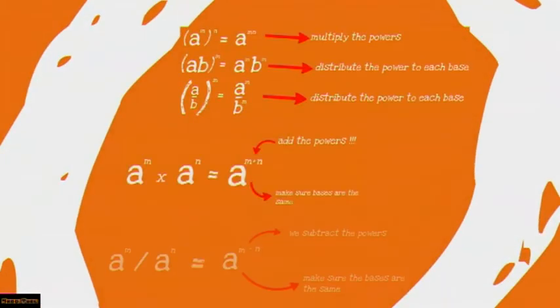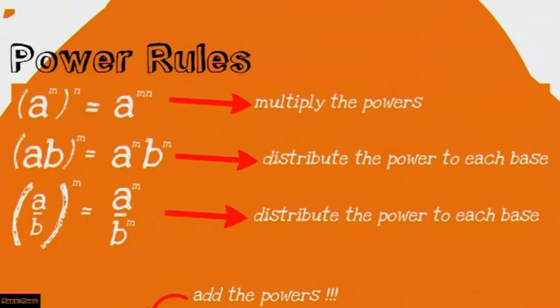Let me remind you of the exponential laws. Let's look at the power rule. If given (a to the power m) to the power n, this will equal a to the power m·n — you multiply the powers. When given (a·b) to the power m, this will equal a to the power m times b to the power m — you distribute the power to each base.